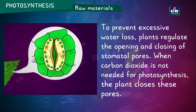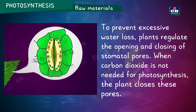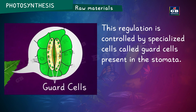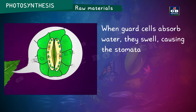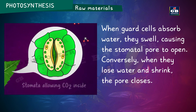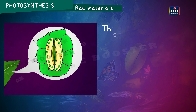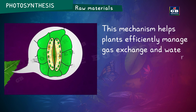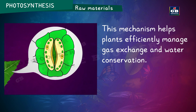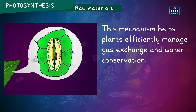To prevent excessive water loss, plants regulate the opening and closing of stomatal pores. When carbon dioxide is not needed for photosynthesis, the plant closes these pores. This regulation is controlled by specialized cells called guard cells present in the stomata. When guard cells absorb water, they swell, causing the stomatal pore to open. When they lose water, they shrink and the pore closes. This mechanism helps the plants to efficiently manage gas exchange and water conservation.